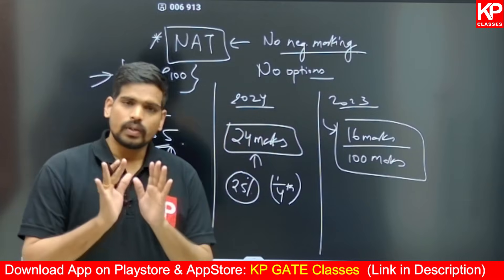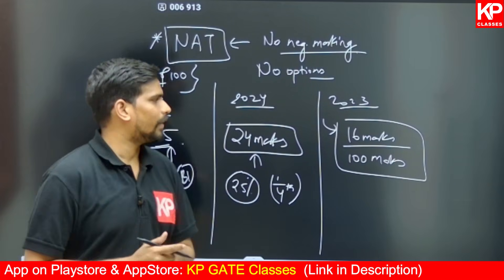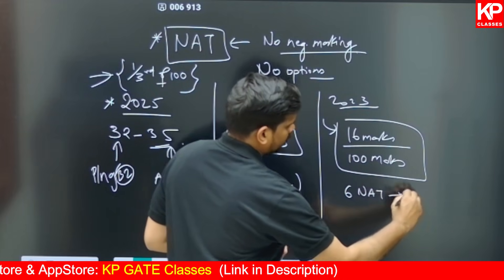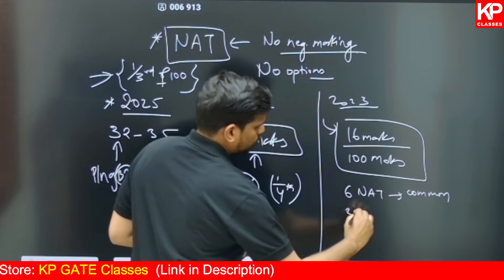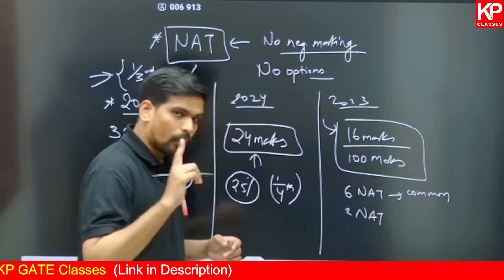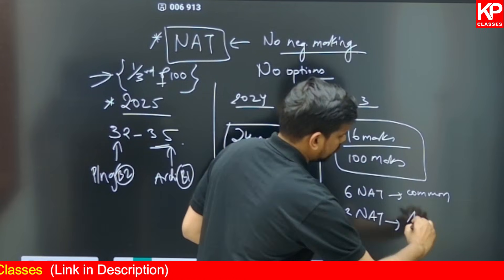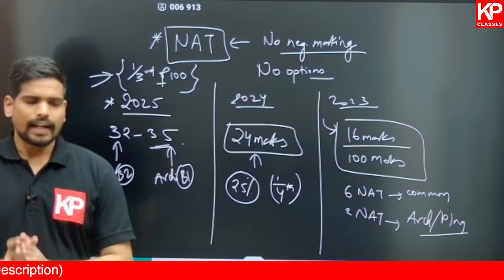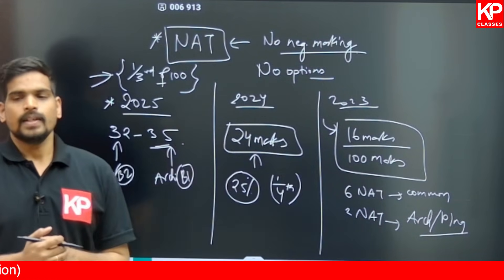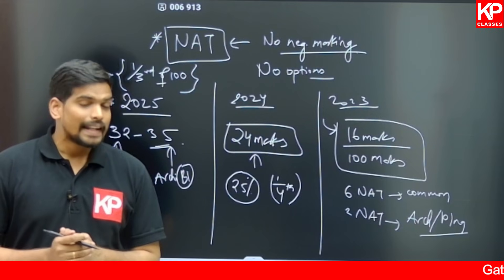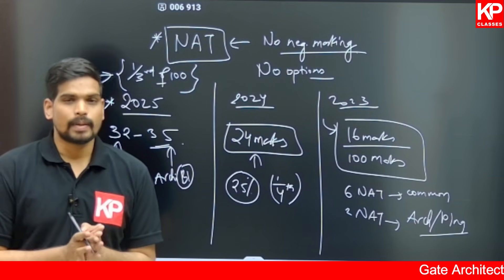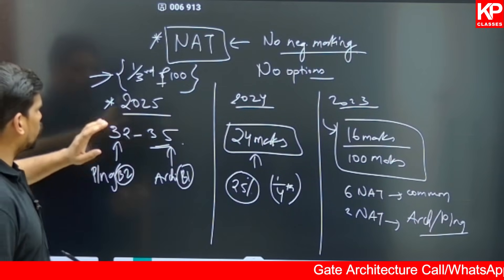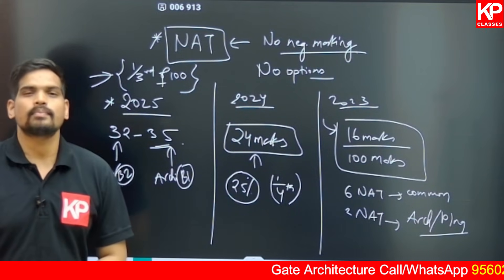In 2023, there were only eight numerical questions: six in the common part and two in Part B, all of which were two-mark questions with no one-mark numericals. So, in summary, the weightage of numerical questions in the paper is not fixed — it can range anywhere between 16 percent to 33 or 35 percent.